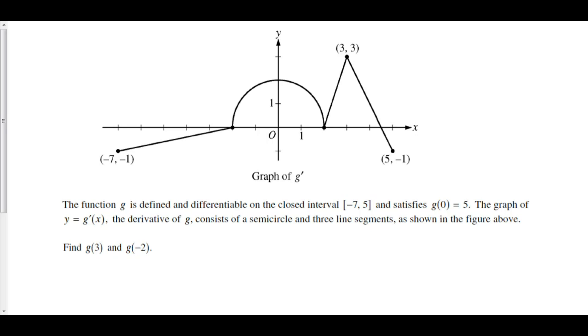The function g is defined and differentiable on the closed interval from negative 7 to 5 and satisfies g of 0 is equal to 5. The graph of y equals g prime of x, the derivative of g, consists of a semicircle and three line segments as shown in the figure above.